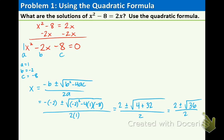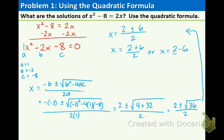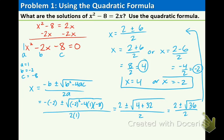Now the square root of 36 is 6, so we can write 2 plus or minus 6, divided by 2. Remember that plus or minus means there are two answers. So x equals 2 plus 6 divided by 2, or x equals 2 minus 6 divided by 2. That gives us 8 over 2, which equals 4, and negative 4 over 2, which equals negative 2. So the two solutions are x equals 4, or x equals negative 2. You can always check your answers by plugging them into the original equation, and if they work on both sides, then you know you got it right.